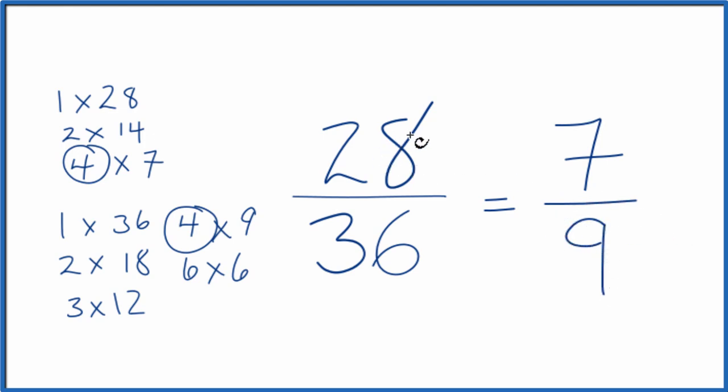So we've simplified 28/36 down to 7/9 and we can't reduce or simplify this any further.